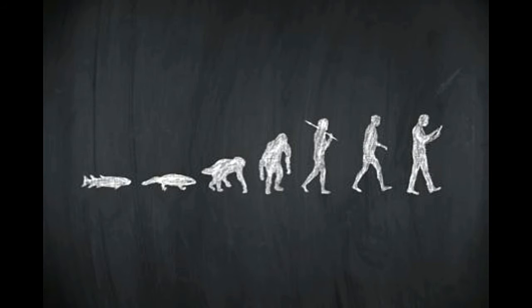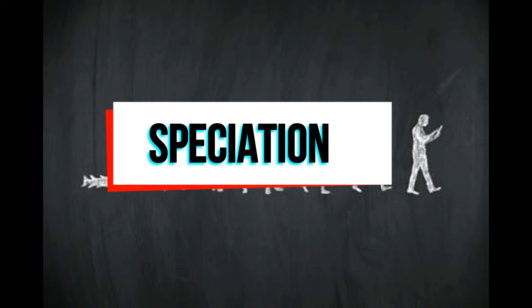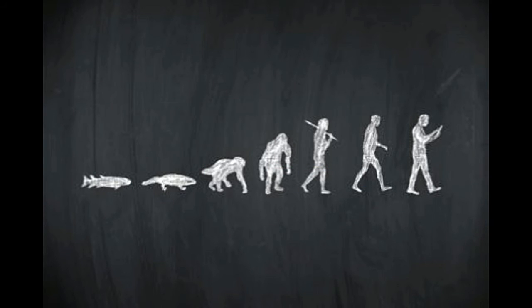Speciation refers to the creation of a new species. The differentiating factor between the old and new species is that they are unable to breed with each other. Speciation takes place via multiple processes, which include geographical isolation, competition, and polyploidy.